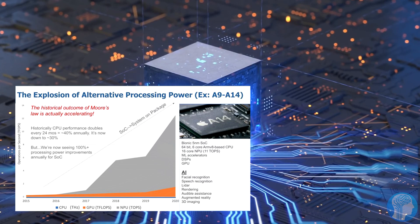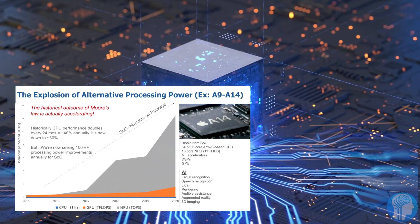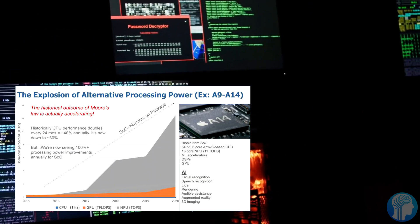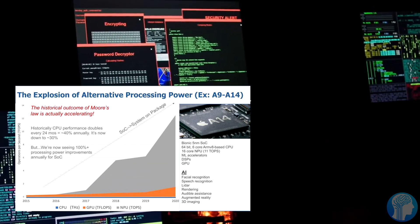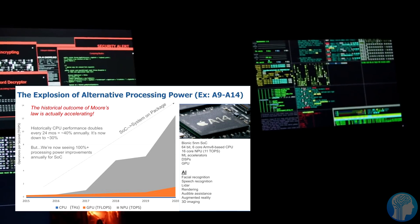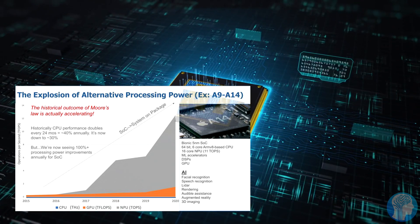For three processor types, the vertical axis represents operations per second and the horizontal axis represents time. The CPU is measured in terahertz, which is the blue line you can barely see. The GPU is measured in trillions of floating point operations per second, and the NPU is measured in trillions of operations per second.